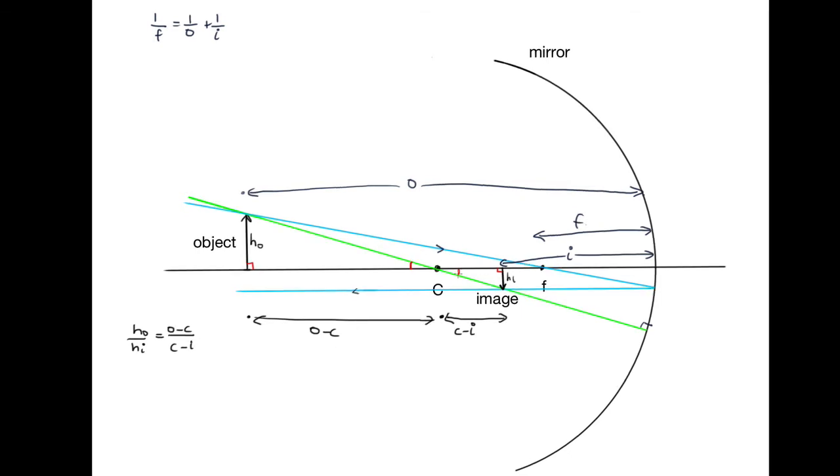We've used one set of similar triangles to get these expressions. Now what we're going to do is look at this triangle here and this triangle here. You can see that again, we've got vertically opposite angles, which are going to be equal. And we'll draw a line vertically downwards from here. So that's 90 degrees in there.